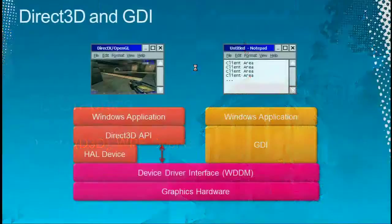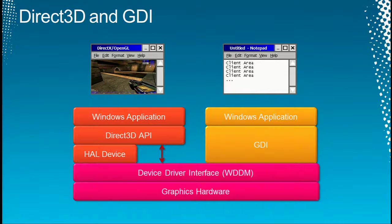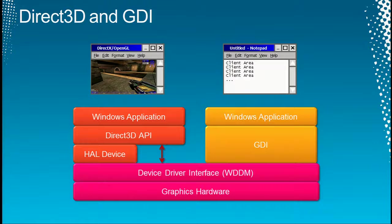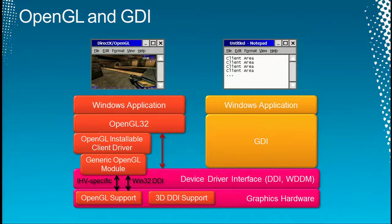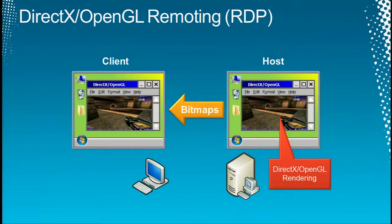Moving to 3D graphics where things get more interesting. I don't want to dive into how the architectures look like for Direct3D and OpenGL — just to mention that it's two stacks compared to GDI. You can mix and match GDI and DirectX content in one window, but they're two different graphics pipelines. The same is true for OpenGL. Where OpenGL is using some of the DirectX API. Most of the DirectX or OpenGL remoting was traditionally done on the host side when you look at RDP.